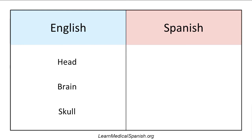Here's the first word: head. So how do you say head in Spanish? La cabeza. La cabeza. Throughout this lesson, I'll be using the definite article in front of the word, so that you can get used to it, because they use those articles a little more often in Spanish, and it helps you learn the gender of the word as well. So, la cabeza.